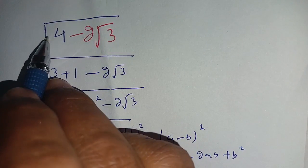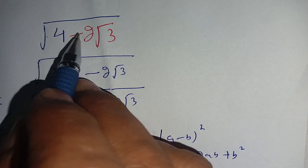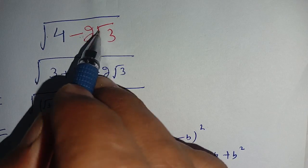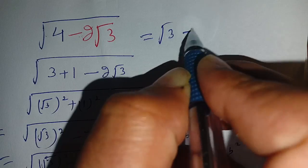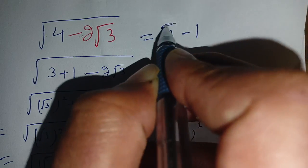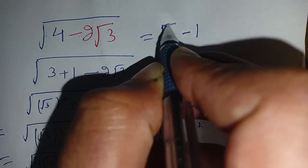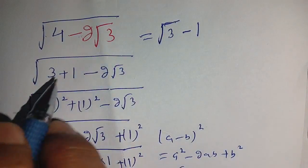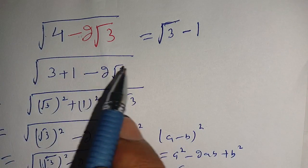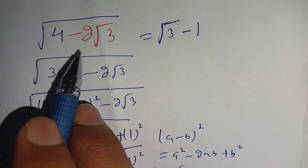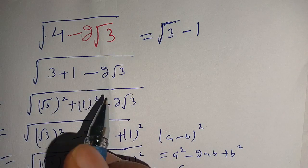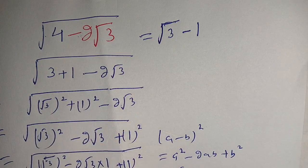Thus, this radical problem — square root of 4 minus 2 square root of 3 — is equal to square root of 3 minus 1. This is our required solution. If you are new here, you can subscribe to our channel for more math videos. See you in the next video, till then bye!